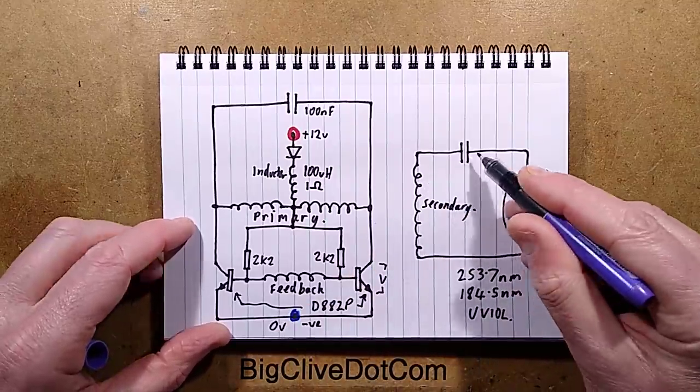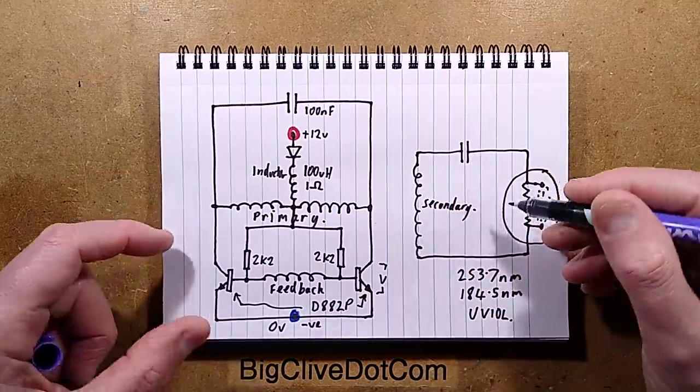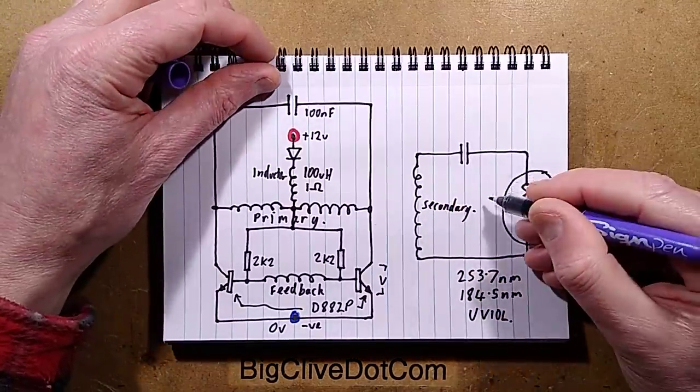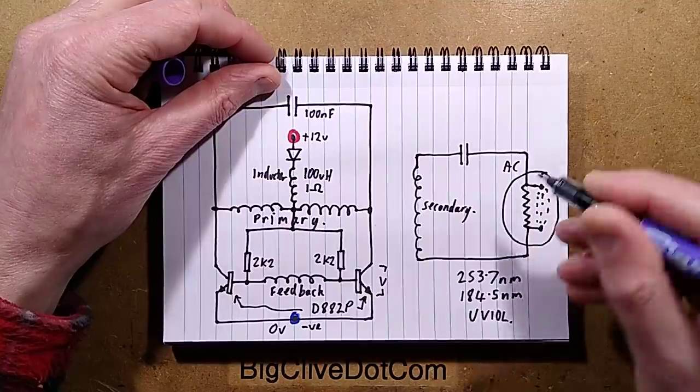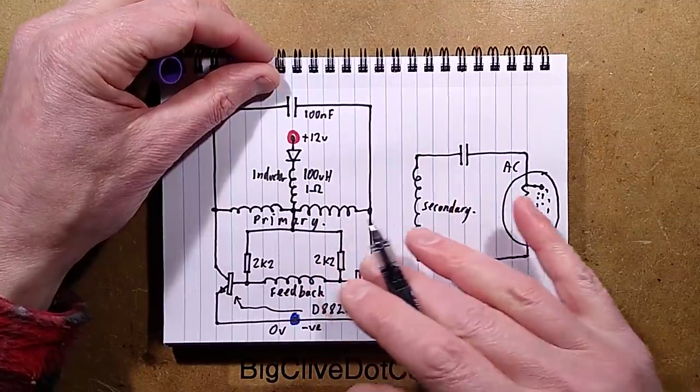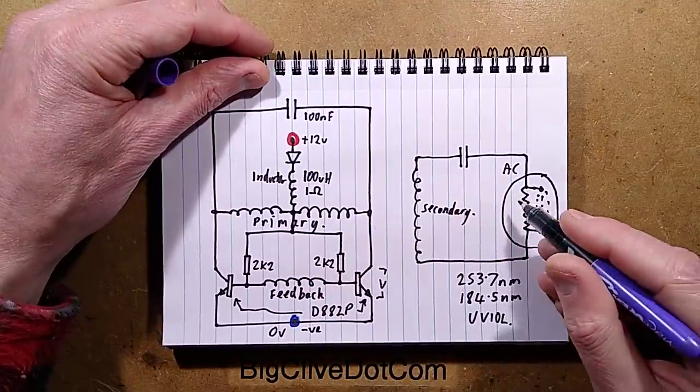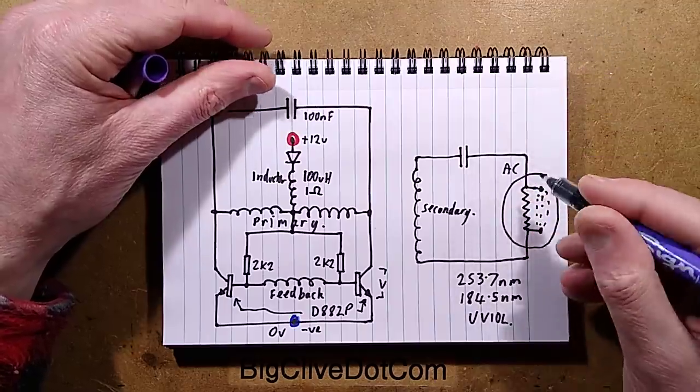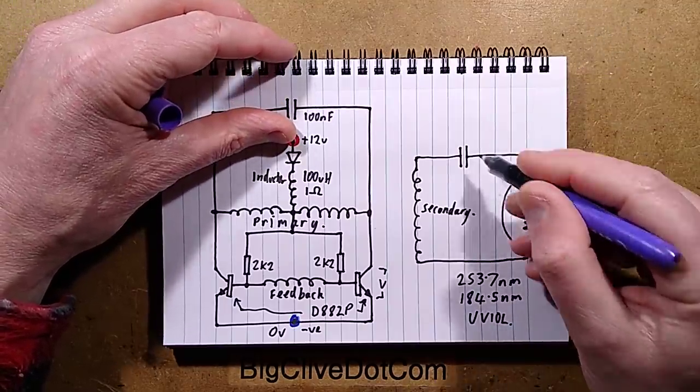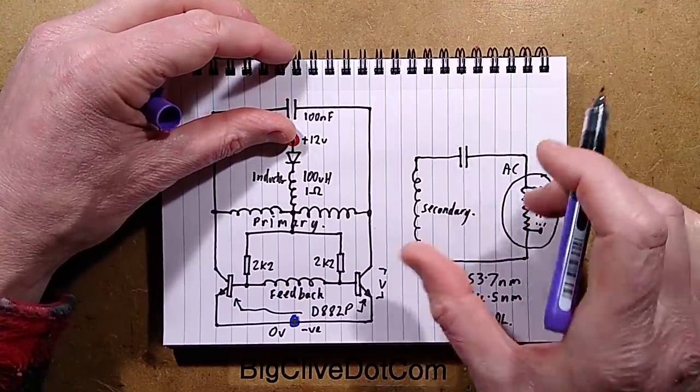The secondary is normally high voltage in these things. I mean, it's not always high voltage, but it quite often is. It's limited by this capacitor. This is effectively the output, which is AC.